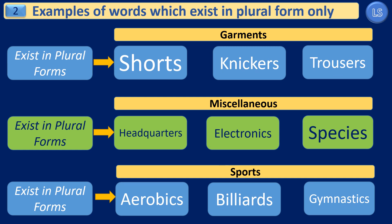In the second group of examples, we again have three subsections: garments, miscellaneous items, and sports items. Under garments, we have the words shorts, knickers, and trousers. We don't call them short, knicker, or trouser, because all these items come in plural forms only.